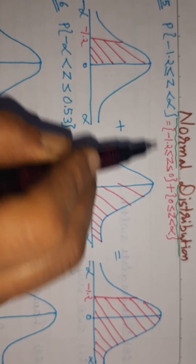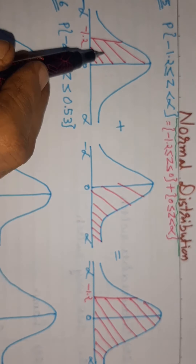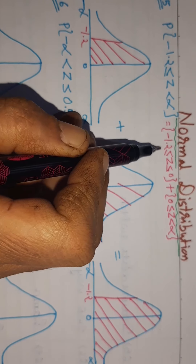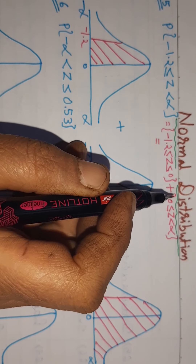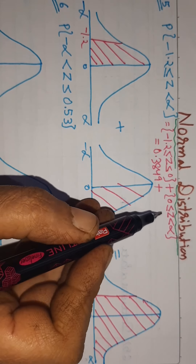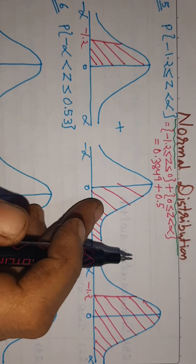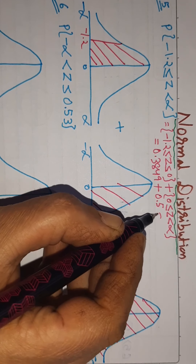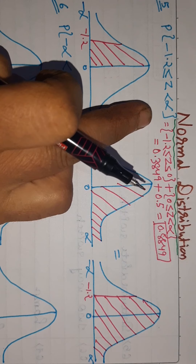Remember, the minus sign is simply ignored when looking in the Z table. The minus sign is only used in the diagram to indicate which side — left or right. At the time of looking in the table, we ignore the minus sign and simply look up 1.2 in the 0 column. The value is 0.3849, plus 0 to infinity which is 0.5. So the total area is 0.3849 + 0.5 = 0.8849. This is the area between minus 1.2 and infinity.